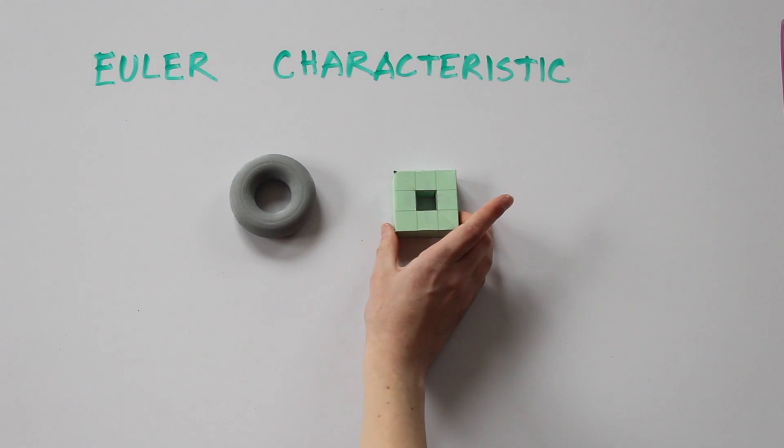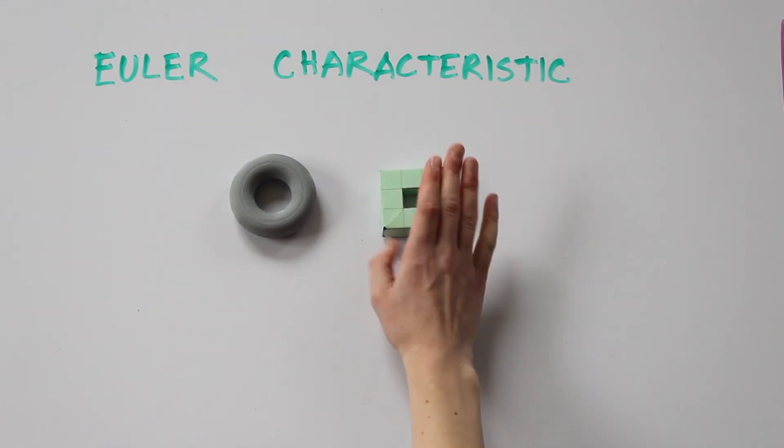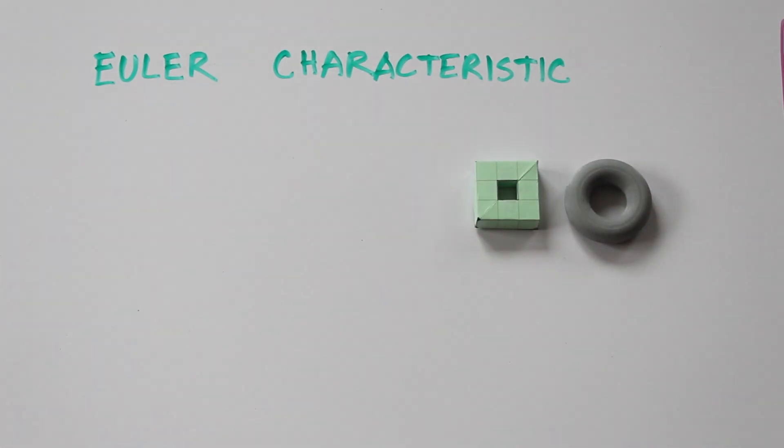So the Euler characteristic of a surface tells you, in a sense, how many holes the surface has. Let's find the Euler characteristic of the torus.